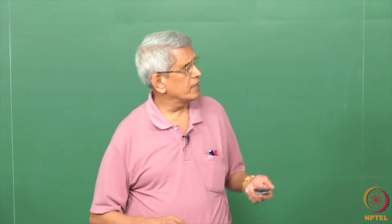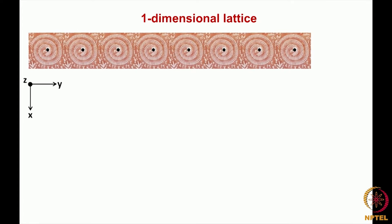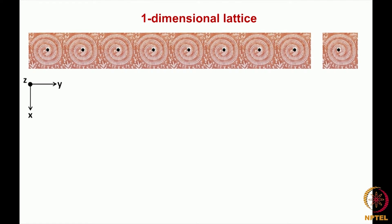The best way to represent a repeating pattern is to represent it by a point. So what we have done is represent each repeat with a point. This point could be placed anywhere — it does not matter — but once placed at a particular position, it should be placed at that same relative position everywhere. That is how the lattice is generated. Now we can look at the periodicity of the lattice because we have removed the pattern and can clearly see what is getting repeated.